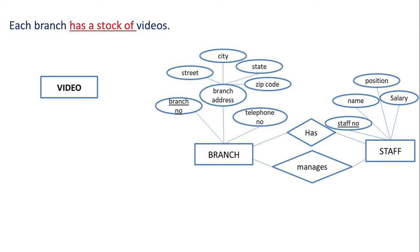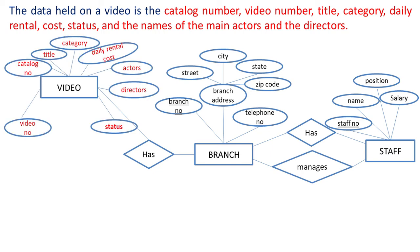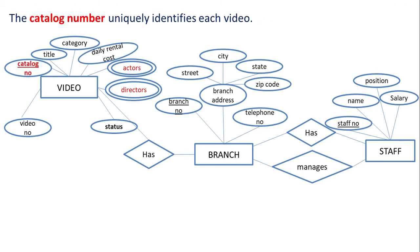Each branch has a stock of videos, so video is an entity. Branch and video have an association — branch has stock of videos. The data held on a video is the catalog number, video number, title, category, daily rental cost, status, and the names of the main actors and directors. These are all attributes of video. Since there can be more than one actor and director for a video, actors and directors are multi-valued attributes. The catalog number uniquely identifies each video, so catalog number is the primary key for video.